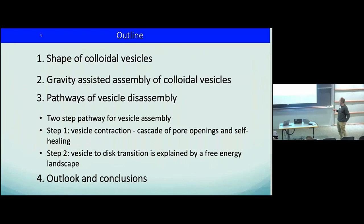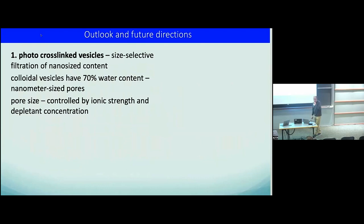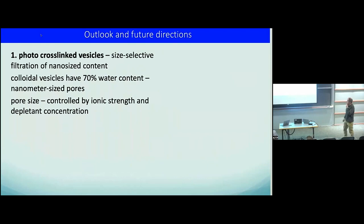So the pathways of vesicle disassembly involve a two-step process: first, vesicle contraction through a cascade of pore opening and closing — something observed and studied in lipid bilayers. In this system, because of the length scales and time scales involved, we can directly visualize much of this dynamics. Then there is this vesicle-to-sheet transition explained by the free energy landscape. The system now works pretty well when conditions are right.